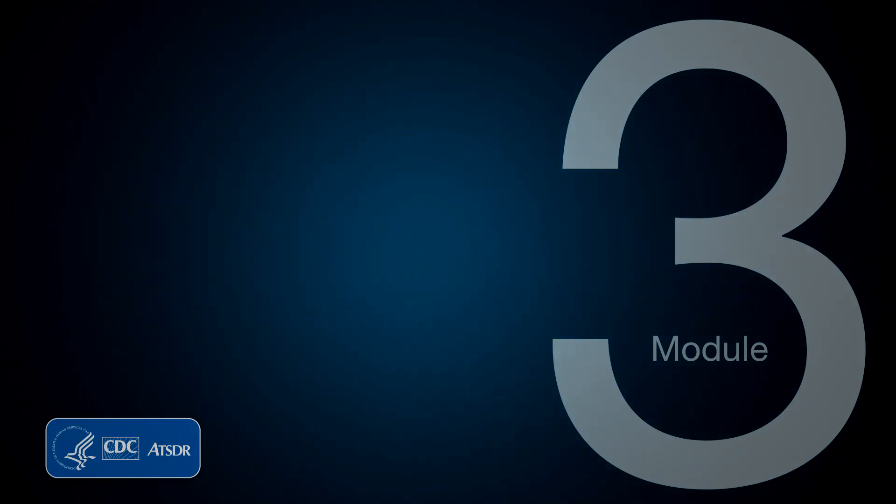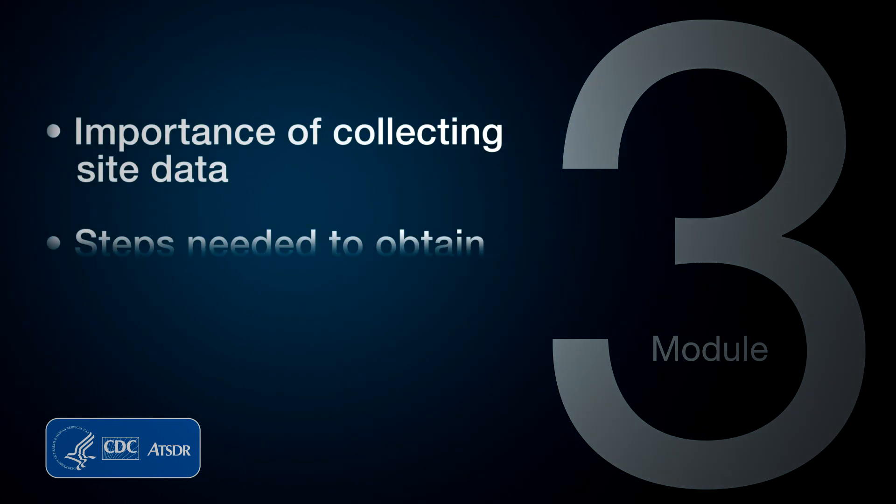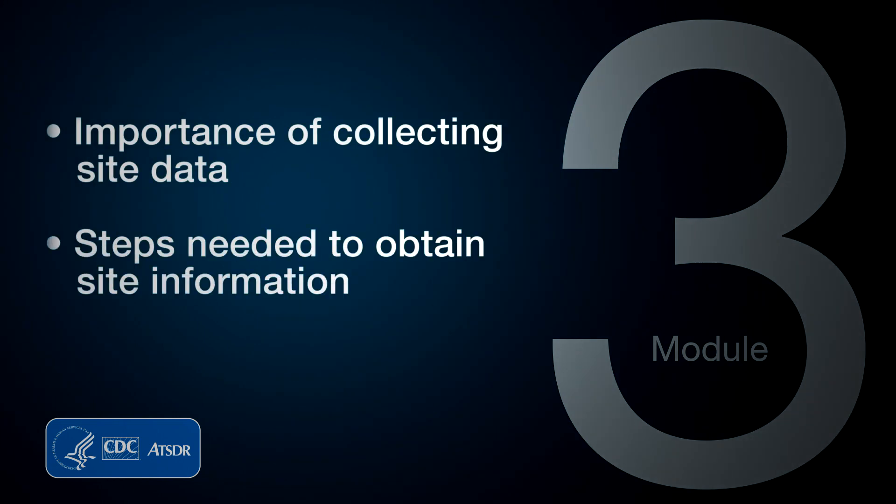Module 3 will help you answer these questions. In this module, you'll learn about the importance of collecting site data and the steps needed to obtain the site information. You will find information about the types of data you need for the PHA, what are good data sources, and what factors you should consider when visiting the hazardous waste site. Module 3 also includes tools to help you document and organize the site evidence. Finally, this module will introduce you to the Gala Lumber Company Case Study, a fictional site to help you navigate and apply the concepts discussed in this course.